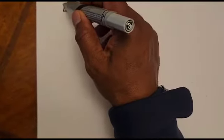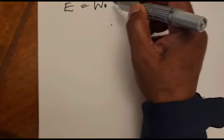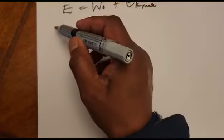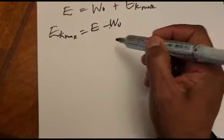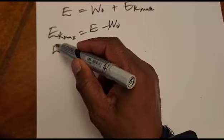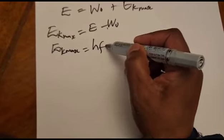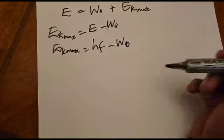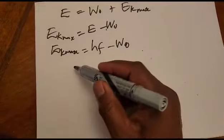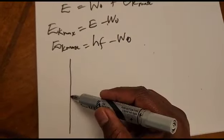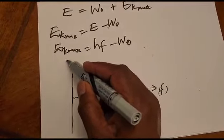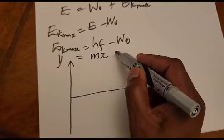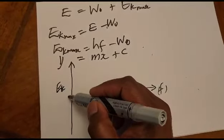Taking the formula E = W₀ + EKmax and making EKmax the subject gives EKmax = E − W₀, which simplifies to EKmax = hf − W₀. Plotting this graph with frequency on the horizontal axis and kinetic energy in joules on the vertical axis produces a straight-line graph, comparable to y = mx + c.